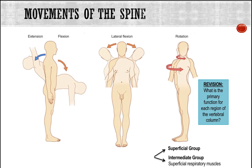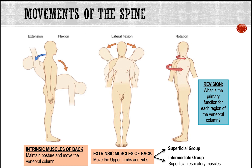Building on the previous lecture, part of your revision activity is to summarize the main movements associated with each of the spinal segments. Looking at the specific muscles of the back, these can be divided into two groups. Firstly, we have the intrinsic muscles of the back, which are your deep muscle group. The true back muscles are characterized by their position and their innervation by branches of the dorsal rami of the spinal nerve.